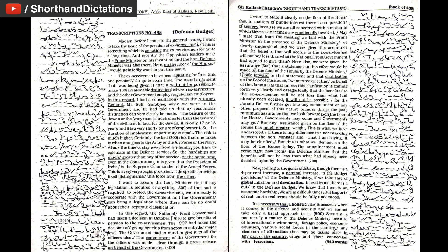In fact, for the Jawan, it is only 17 or 18 years and it is a very short tenure of employment. So, the duration of employment opportunity is small. The risk is much higher. Certainly, the last risk that one takes is when one goes to the Army or the Air Force or the Navy. Also, the time of stay away from his family, you have to calculate in the Defence Service. So, the hardships are much greater than any other service.